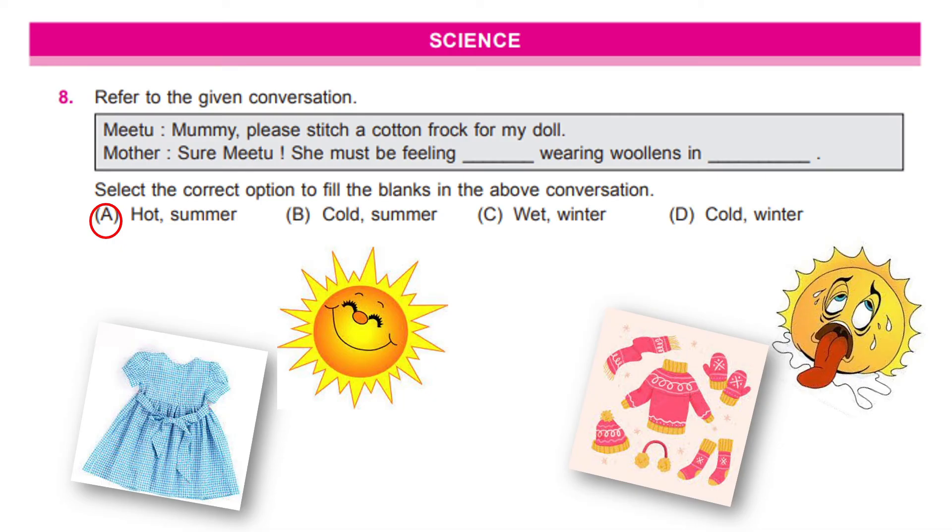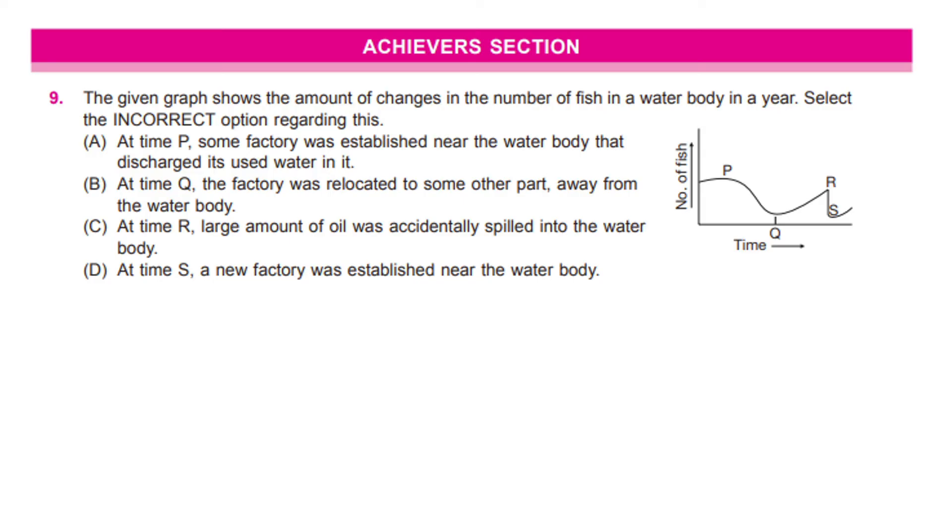So far, it has been easy. Now, let us take a look at our achievers section. This is the first question here which is more analytical. The question reads, the given graph shows the amount of changes in the number of fish in a water body in a year. Select the incorrect option regarding this. This is the graph. You should read it carefully that as you go along the sleeping line or horizontal line, the time increases. And as you go along the vertical line or standing line, it is the number of fish that increases.